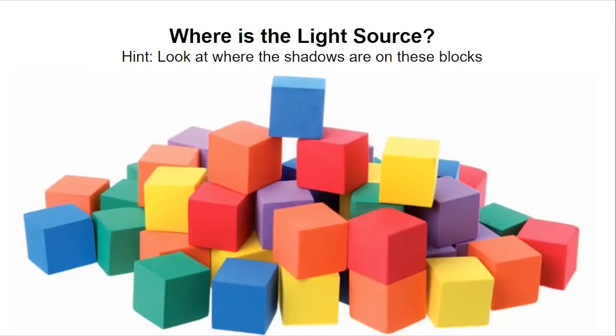So if we look at a whole pile of cubes, where's the light source in this? My hint is to look at where the shadows are on the blocks. If I look at that blue one on the top, the top part is light, that front part is dark. The orange and red one underneath it, same thing. So my guess is that light source is up towards the top and maybe towards the back of that pile because the front of the pile is in shadow.